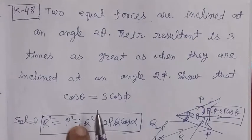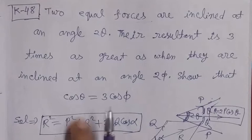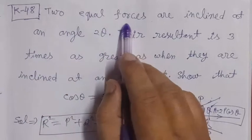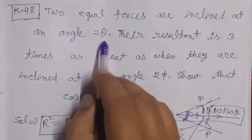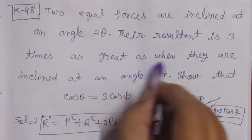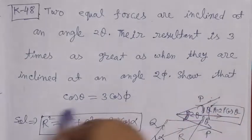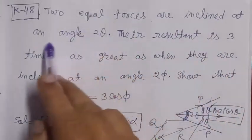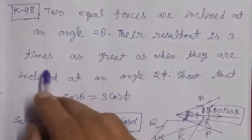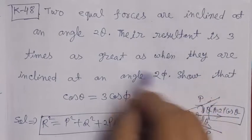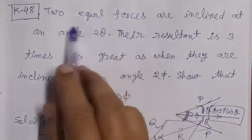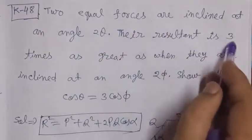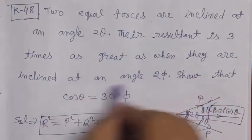Bismillahirrahmanirrahim. This problem is related to statics, Chapter: Resultant of Two Forces. Two equal forces are inclined at an angle 2 theta. Their resultant is three times as great as when they are inclined at an angle 2 phi. We need to show that cos theta equals three times cos phi. In the first case the angle between the given forces is 2 theta, and in the second case the angle is 2 phi. Both forces are equal, and the first resultant is three times the second.